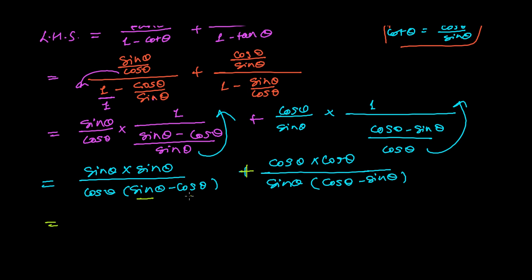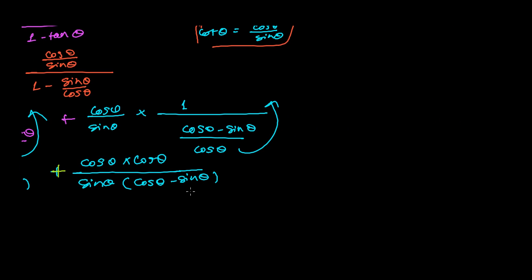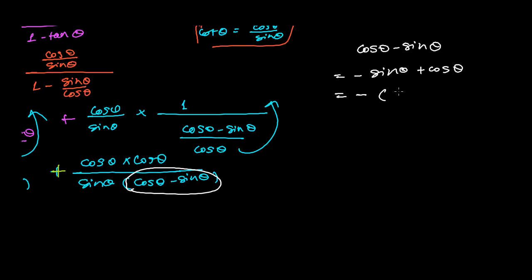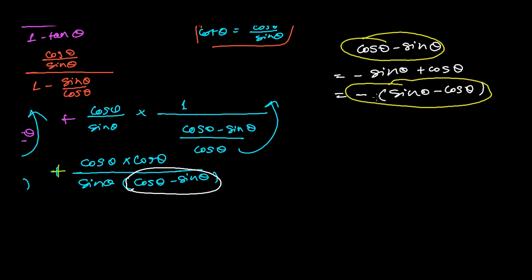Now see: here we have sine theta minus cos theta, and here we have cos theta minus sine theta. To take the LCM easily, I want to make cos theta minus cos theta match. I can write cos theta minus sine theta as minus sine theta plus cos theta, and if I take minus as common, it becomes minus of (sine theta minus cos theta). So in place of cos theta minus sine theta, I will write minus (sine theta minus cos theta).